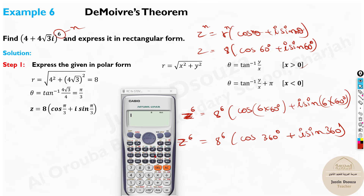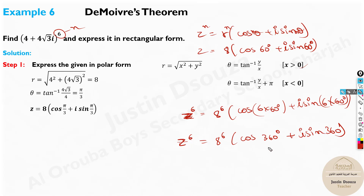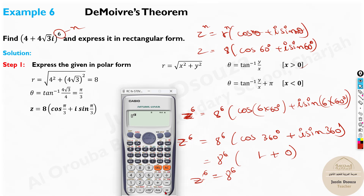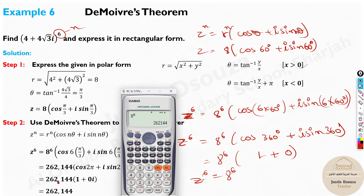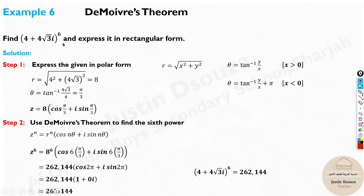So the result is 8 to the power 6 times the quantity 1 plus i times 0. Since imaginary times 0 is 0, the answer is 8 to the power 6. Z to the power 6 is 8 to the power 6. Using the calculator, 8 power 6 equals 262,144. That is the final answer. This is why De Moivre's theorem is very helpful — but remember, De Moivre's theorem applies to complex numbers in polar form, not rectangular form.